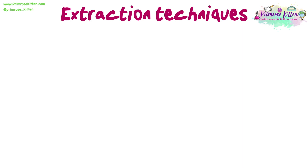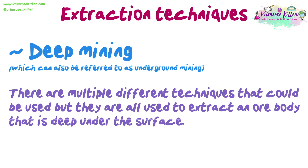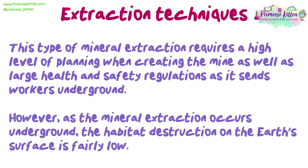We will now begin to look at some of the different extraction techniques that can be used. The specification requires you to understand the processes of deep mining and open cast mining, as well as some examples of mineral types they may be used to extract. Questions may also require you to compare the environmental impacts of each technique. Starting with deep mining, which can also be referred to as underground mining: there are multiple different techniques that could be used, but they are all used to extract an ore body that is deep under the surface. This type of mineral extraction requires a high level of planning and large health and safety regulations, as it sends workers underground. However, as the mineral extraction occurs underground, the habitat destruction on Earth's surface is fairly low.